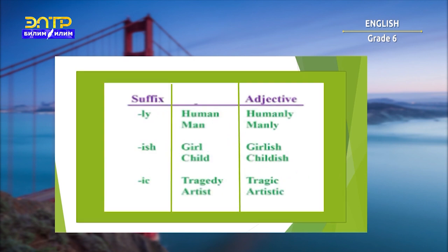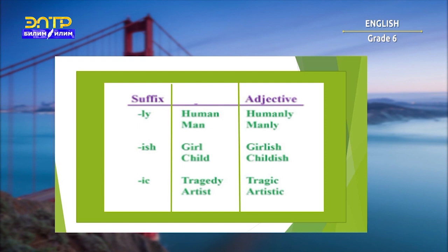Another way to form adjectives from nouns is by adding the suffixes -LY, -IC, or -ISH. Human → humanly. Man → manly. Girl → girlish. Child → childish. Tragedy → tragic. Artist → artistic.